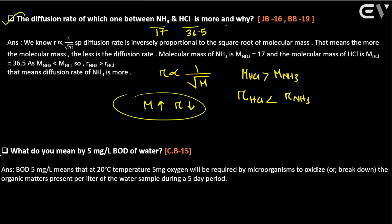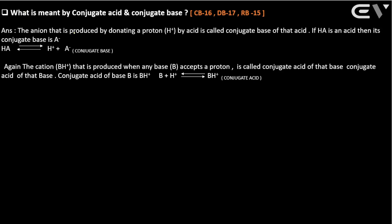What do you mean by BOD of 5 milligrams per liter of water? Also, what is meant by conjugate acid and conjugate base?